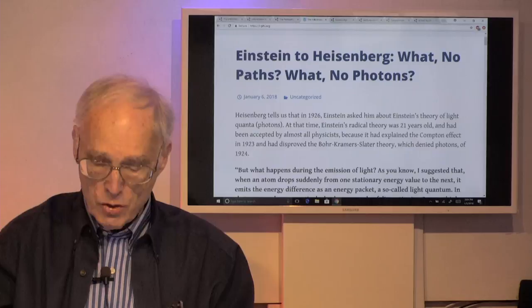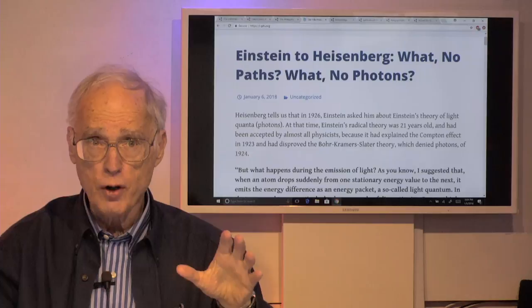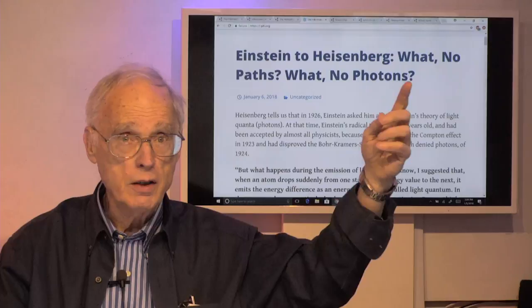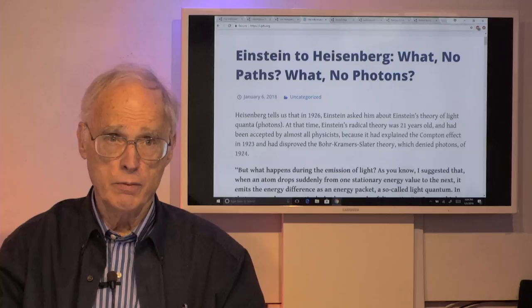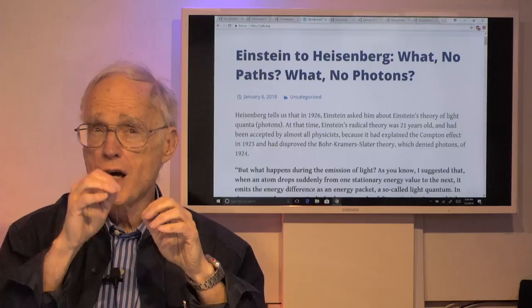Where does Einstein come in on this issue of discreteness? It was his 1905 paper. That year was the miracle year for Albert Einstein: he published his principle of relativity, his light quantum hypothesis — later called photons, which will be the subject of our lecture today — and a paper on Brownian motion, the observed jiggling of tiny pollen particles visible under a microscope.